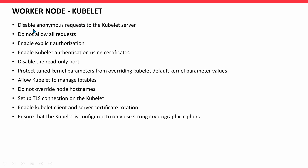Worker node kubelet recommendations: Disable anonymous requests to the kubelet server. Do not allow all requests. Enable explicit authorization. Enable kubelet authentication using certificates. Disable the read-only port. Protect tuned kernel parameters from overwriting kubelet default kernel parameter values. Allow kubelet to manage IP tables. Do not override node hostnames. Set up a TLS connection on the kubelet. Enable kubelet client and server certificate rotation. Ensure that the kubelet is configured to only use strong cryptographic ciphers.